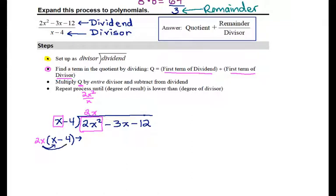That first term is going to be 2x squared, that second term is going to be minus 8x, and I am subtracting this from the dividend, just like I did in my numeric example.